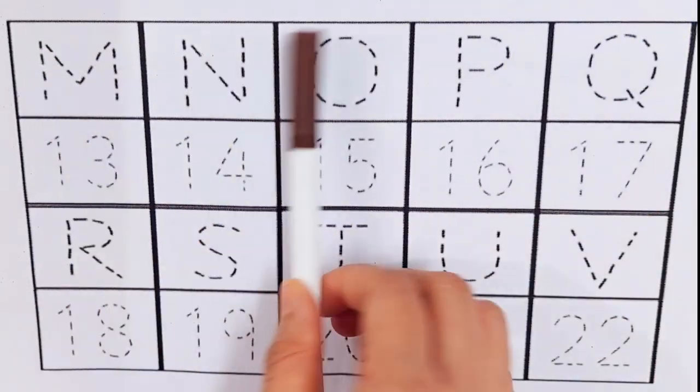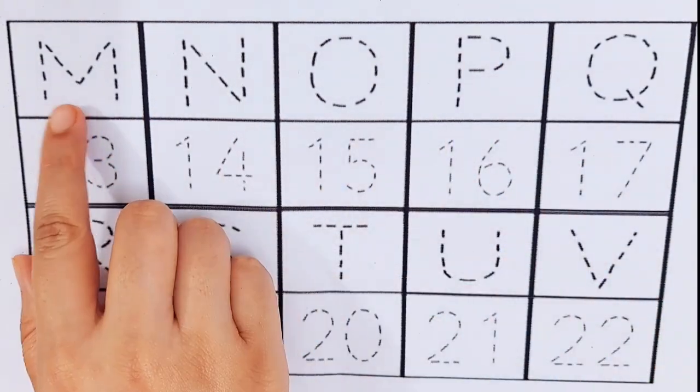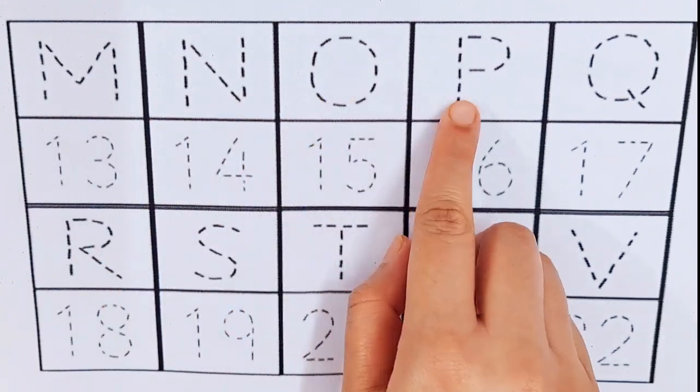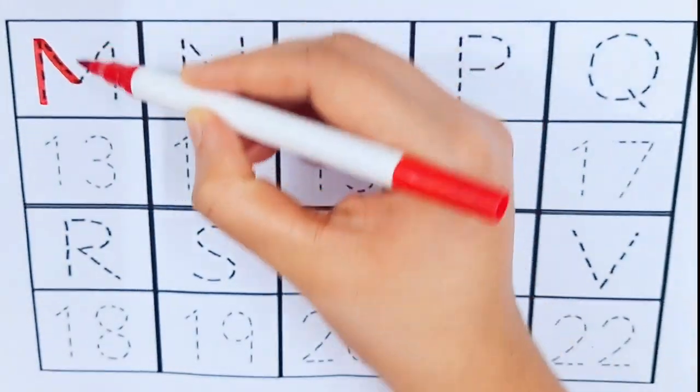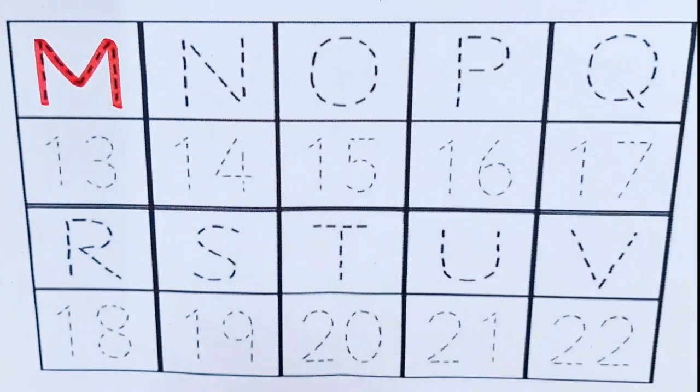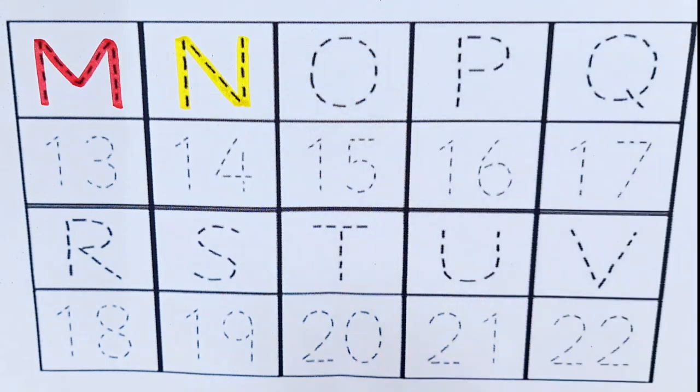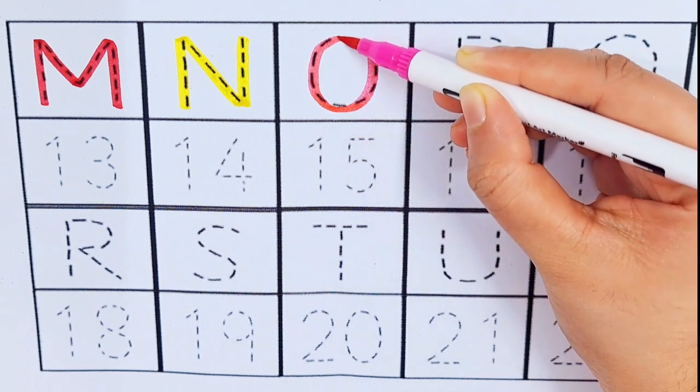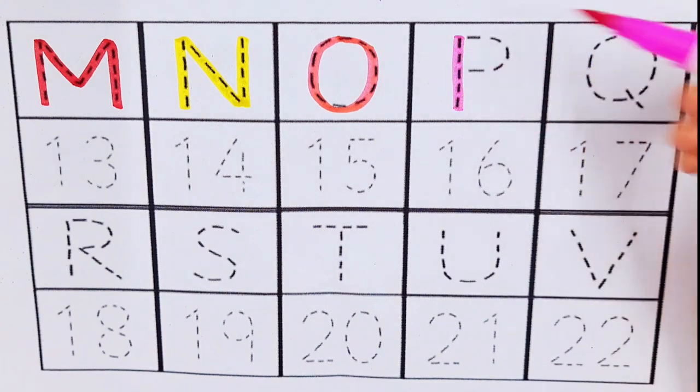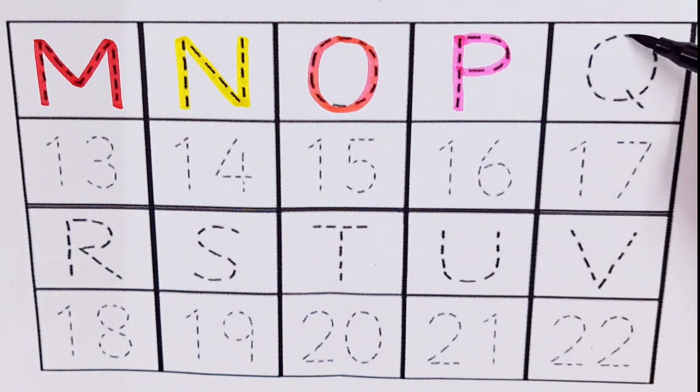Dark blue color, brown color. Let's try to learn some alphabets and numbers. M for moon, N for nurse, O for ox, P for princess, Q for queen.